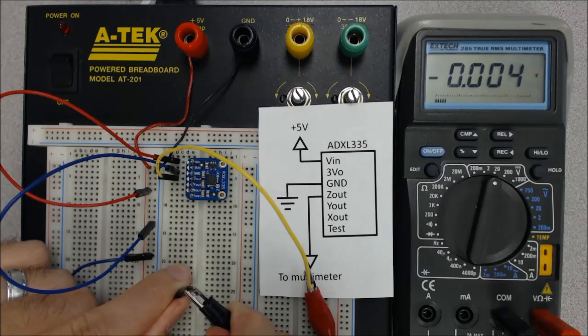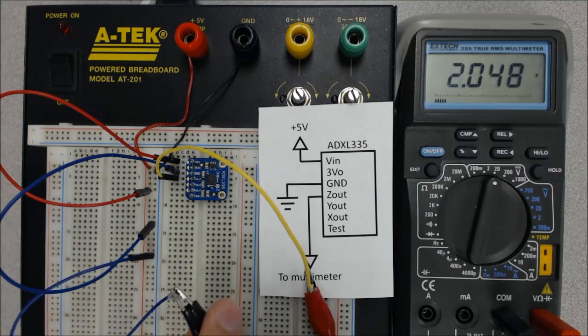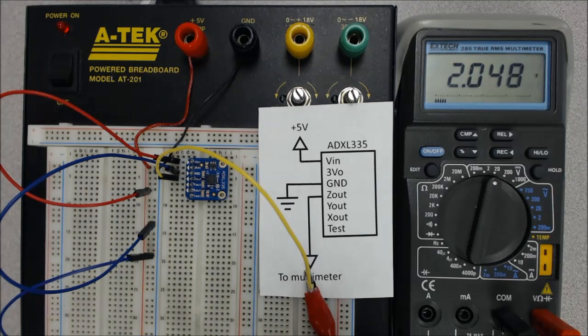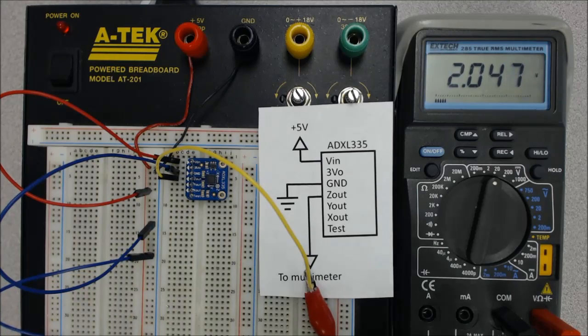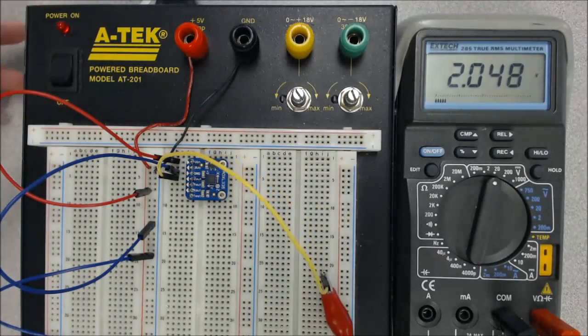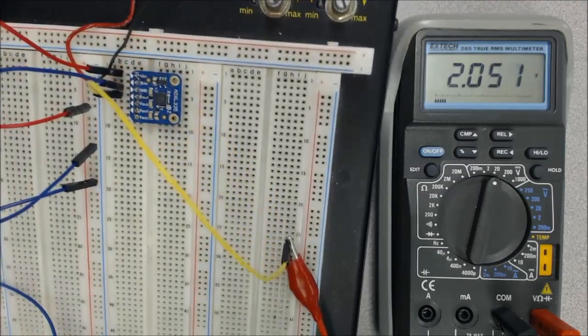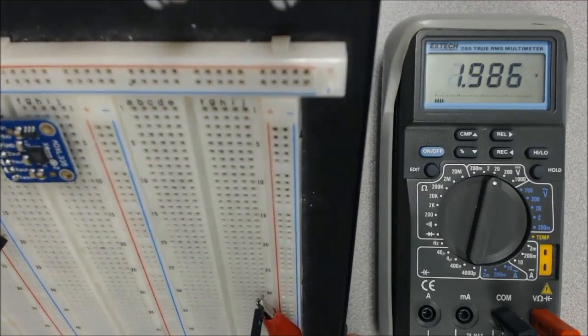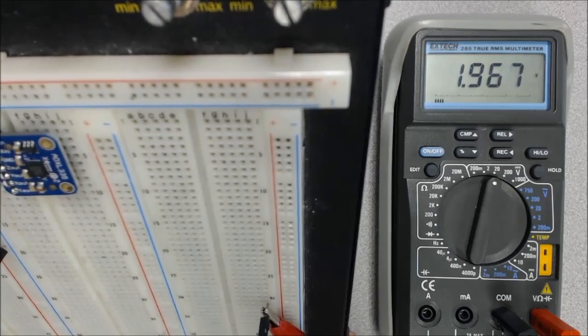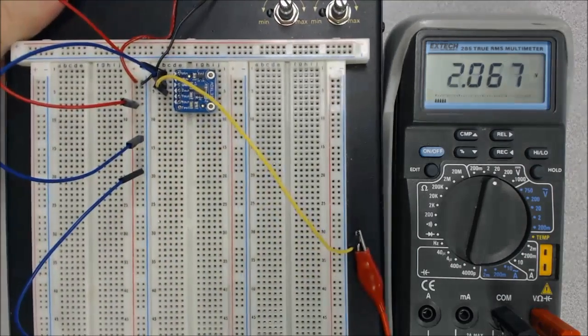And now when I turn on the breadboard, we see I get around 2 volts. And this probably won't make a whole lot of sense for now, but just to show you that this sensor is doing something, as I tip the breadboard up, I get a different voltage on the multimeter. And we'll see more why that happens later on.